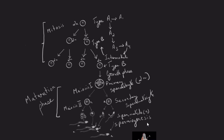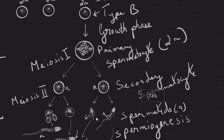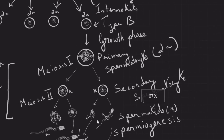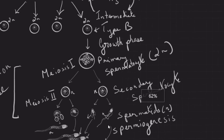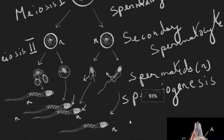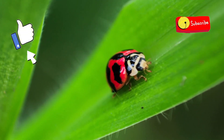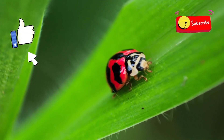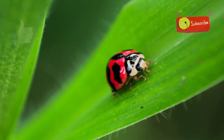During spermiogenesis, changes occur in the cytoplasm, nucleus, and cell organelles of the spermatids, transforming them into fully matured spermatozoa. Hope you found that video helpful — please share, subscribe, and hit the like button. Thank you.